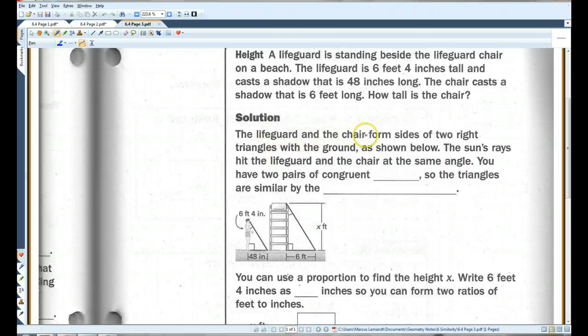So this is our situation. The lifeguard and the chair form sides of two right triangles with the ground as shown below in the diagram. The sun's rays hit the lifeguard and the chair at the same angle, so you have two pairs of congruent angles.